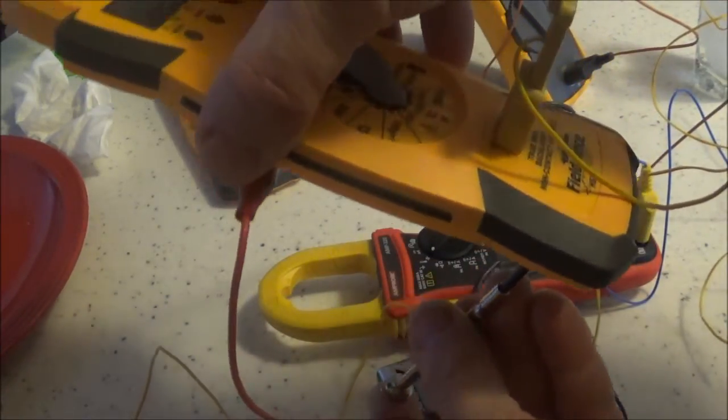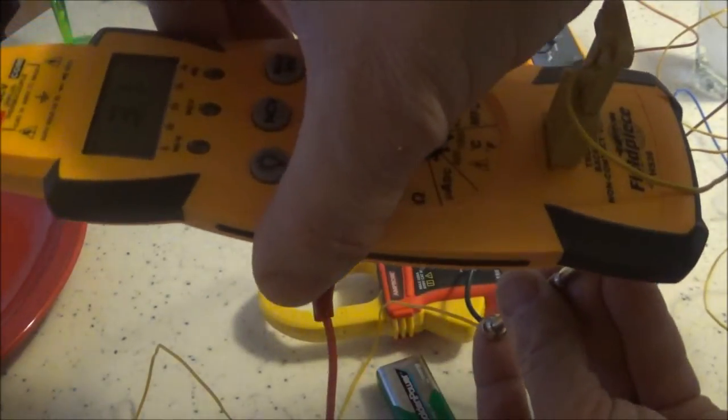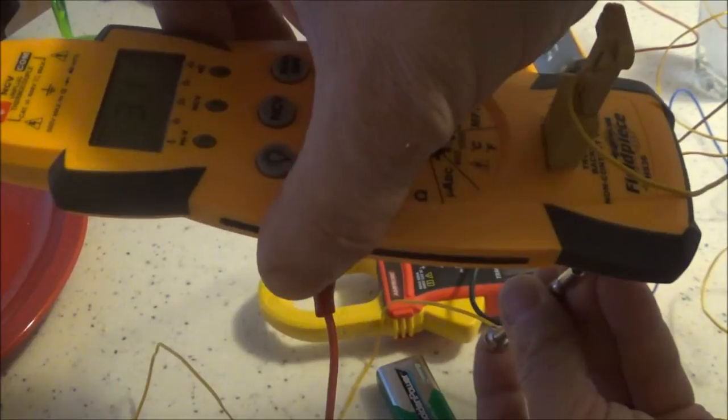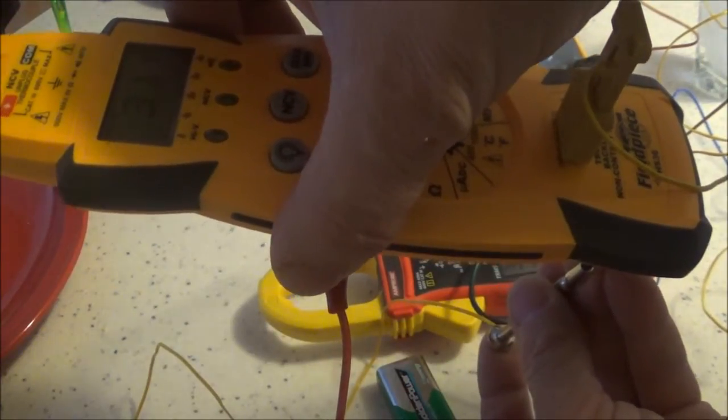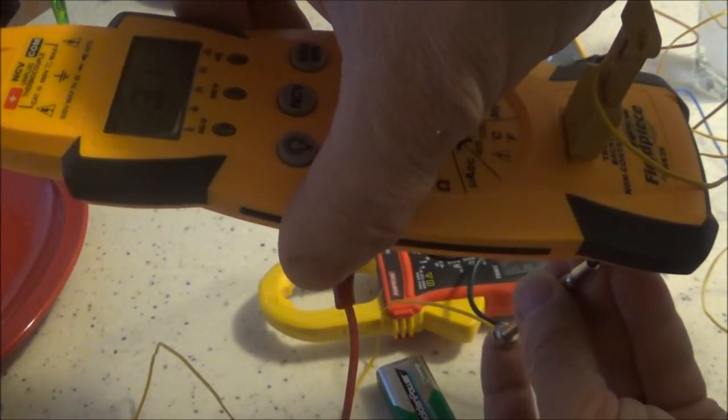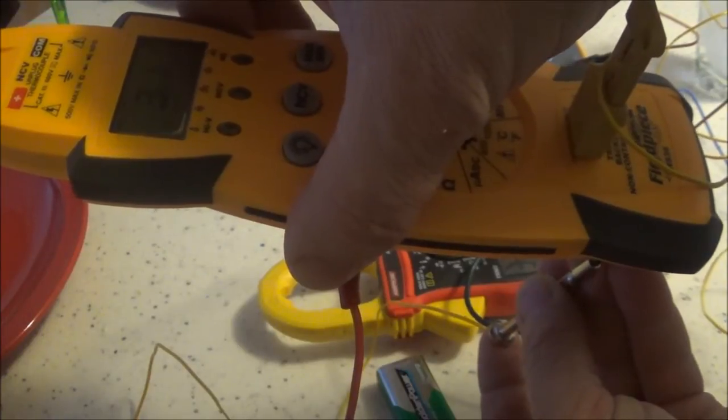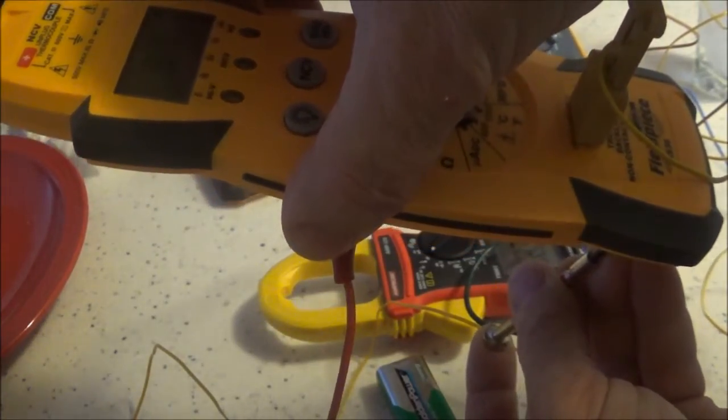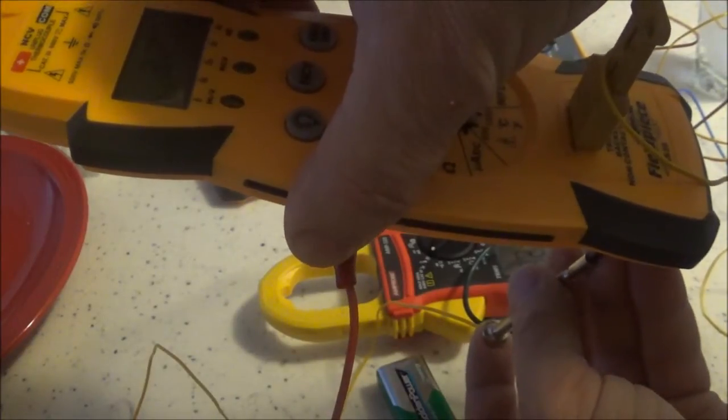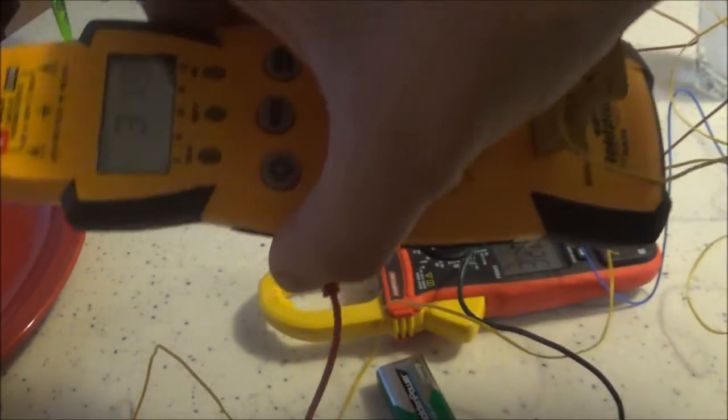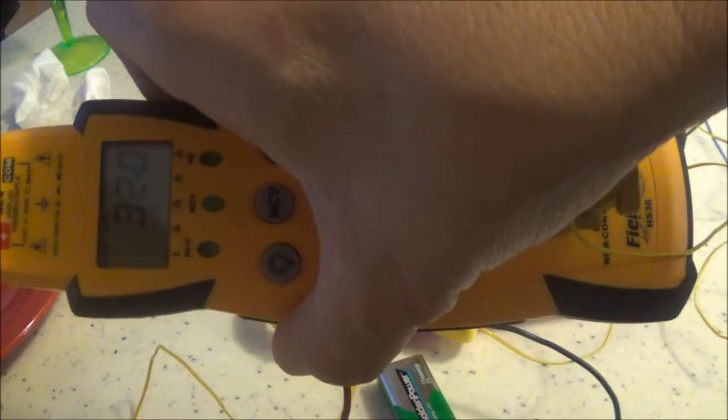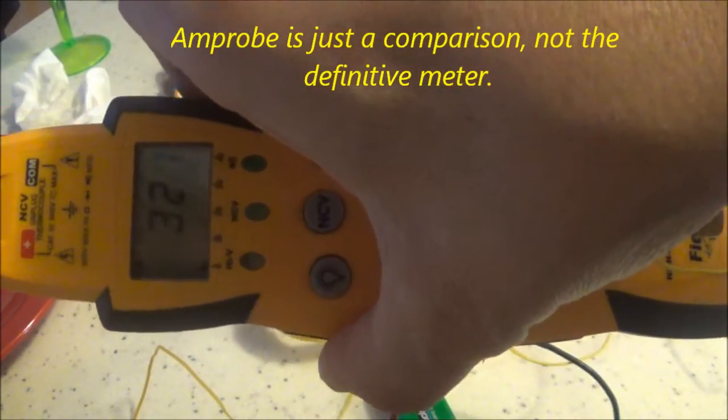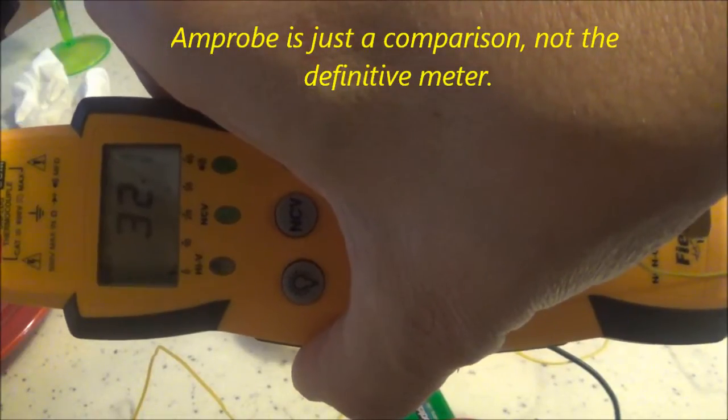So I'm going to adjust that. Turn it clockwise. There we go. Look at that. Turn it just a hair. And that's reading exactly what the amp probe is reading. So now I feel I'm calibrated.